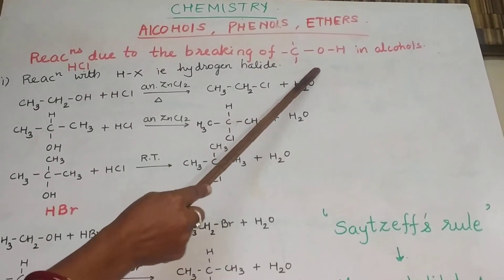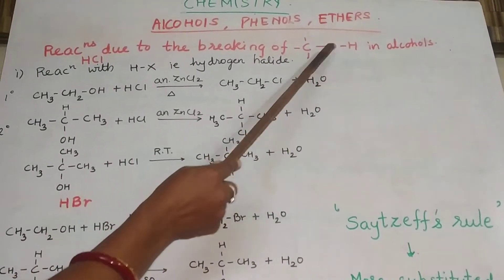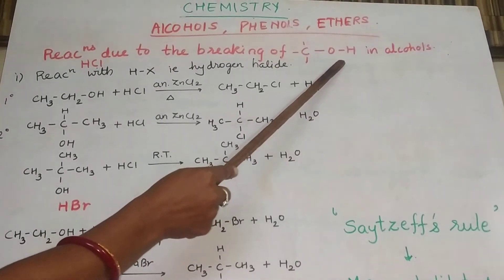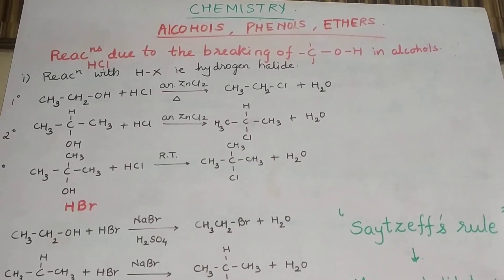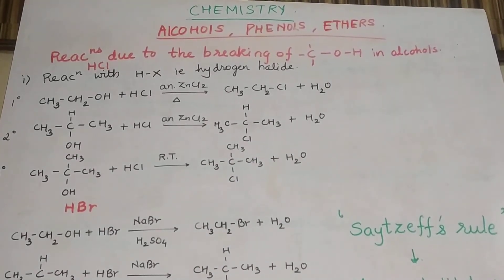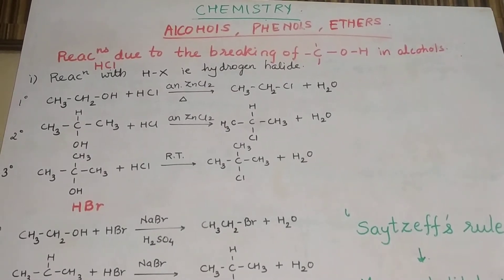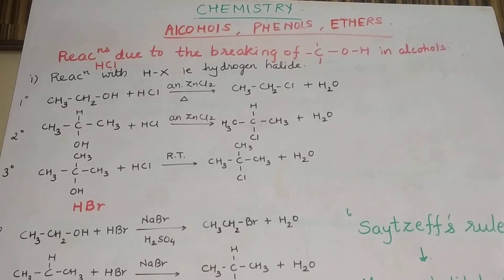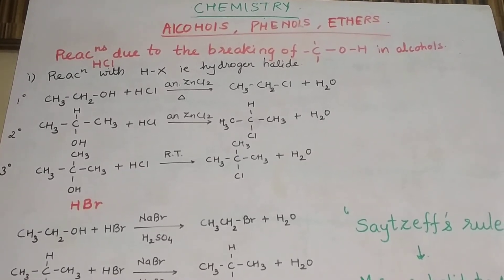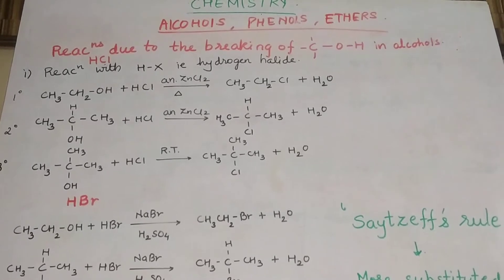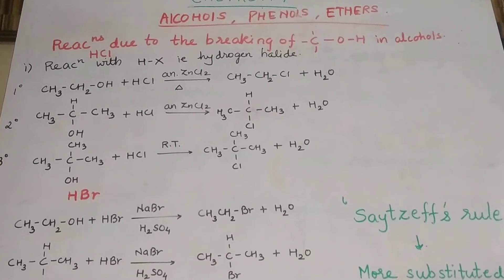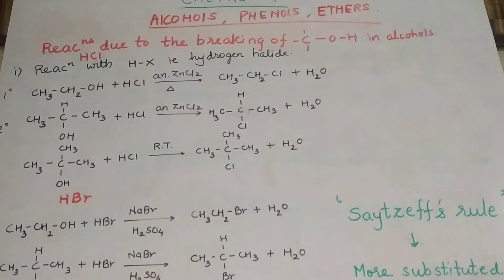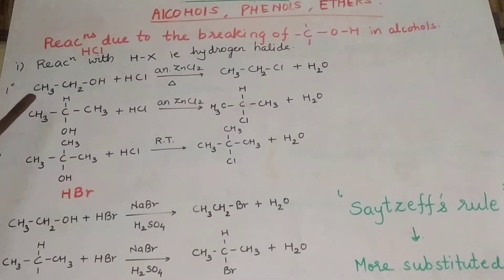Here the bond breaking will take place and OH will be going out because the bond breaking is at the C-O bond. The OH group will be replaced by some other atom or group. Such reactions we are going to see. You will find today's video quite simple because all the reactions we are going to do today we have already done either in 11th standard or in halogen derivatives.